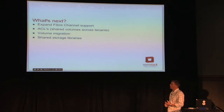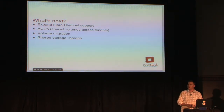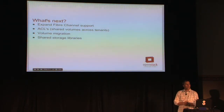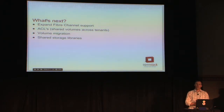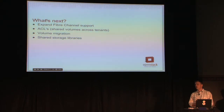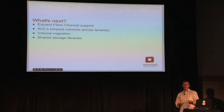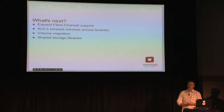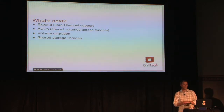As for what's next, this week we've been in the design sessions hammering out ideas and priorities. We already touched on expanded fiber channel support — that's a big one. ACLs: we want to start doing access control lists. One of the big things there is the ability to transfer ownership of volumes between tenants or have multiple tenants with access to a volume. That's going to solve a lot of use cases people have been asking for.